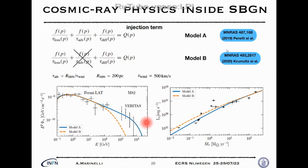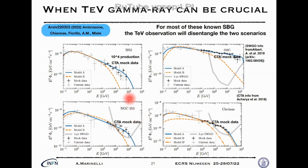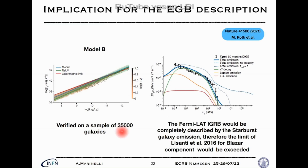We examine how the relation between gamma-ray luminosity and star formation rate changes between the two scenarios for different SBGs at different energies. For all of them, the two scenarios yield different expected gamma rays at the high-energy end. We include the sensitivity of SWGO and perform a mock data production for CTA, showing how these future measurements can tell us much more about the physics inside these sources.